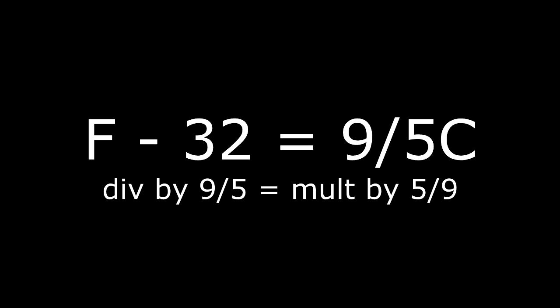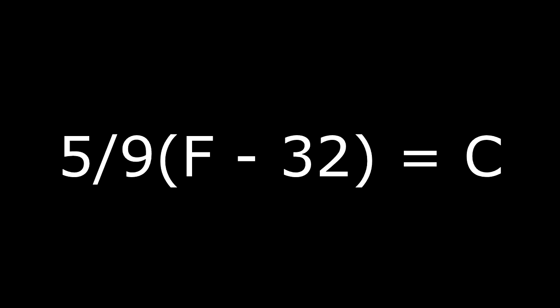So basically, you multiply both sides by 5 ninths, and you're left with C equals 5 ninths times the quantity of F minus 32. You add parentheses so that you say you are placing the entire F minus 32 equation to be multiplied by 5 ninths. And that's the variable.